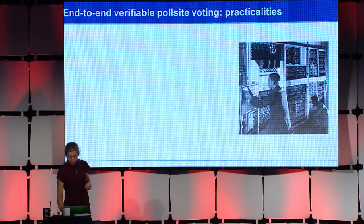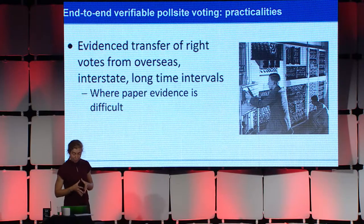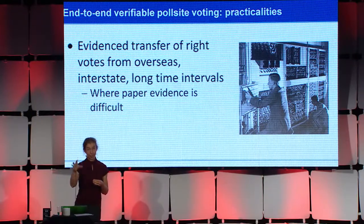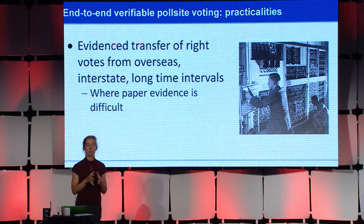This system really belongs in the collection of carefully engineered ways of generating a genuine evidence trail out of secret votes. For better, we get evidence of the proper transfer of accurately recorded votes as the voters intended, across the kinds of distances or time intervals in which a paper evidence trail might be really hard to justify or really hard to secure. Many of the best systems combine a paper evidence trail with an end-to-end verifiable system, but in this case the Electoral Commission really didn't want to be hauling pieces of paper back from London.